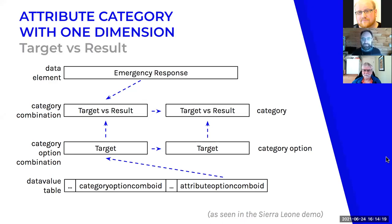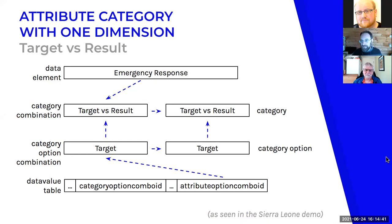With one attribute dimension, the emergency response data element has one dimension — target versus result — with two options: target or result. The category combination is 'target versus result,' the category is 'target versus result' (a different object). If we selected 'target,' the category option combination is simply 'target' combined with nothing — and that goes to the attribute option combo ID.